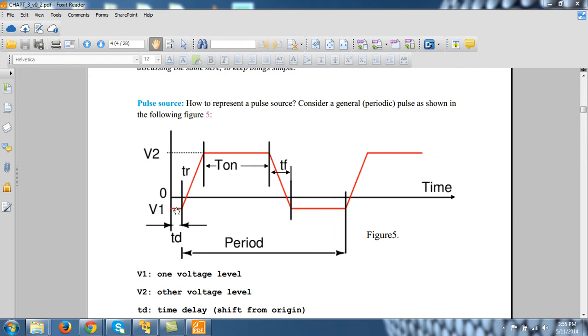This is the lower level voltage of the pulse V1 and this is the higher level voltage V2. The distance where it starts rising, this distance from origin, is called td or delay time.